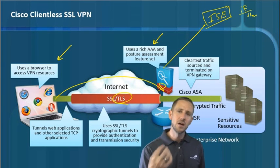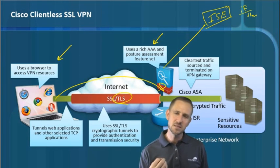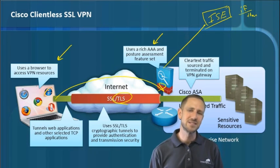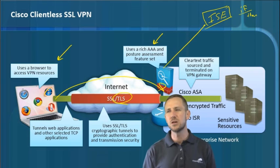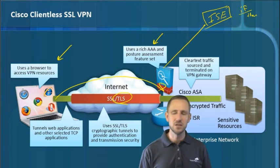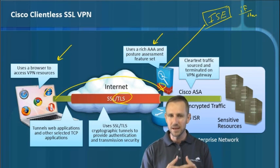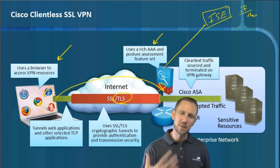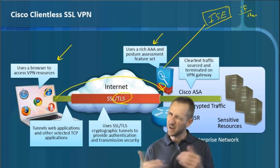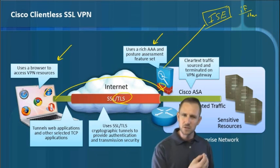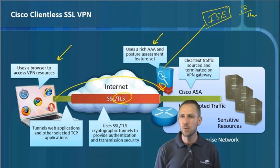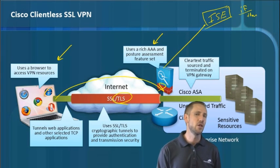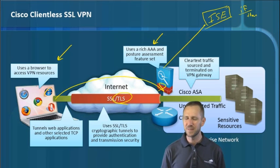Clientless VPN gives the end user the least reliable method of access, particularly for legacy applications like RDP, VNC, and FTP — anything that's not a native web application. To use those, you have to rig them to be tunneled through, and there are caveats. With a traditional IPSec or SSL client like AnyConnect, it establishes a tunnel interface with routes in the local routing table and native apps work as expected. Setting up application support for clientless is harder administratively and tends to be unreliable.